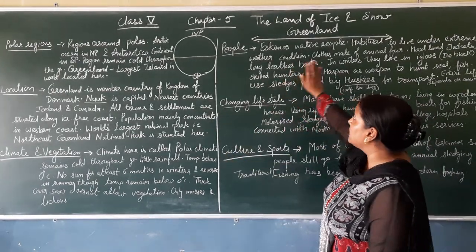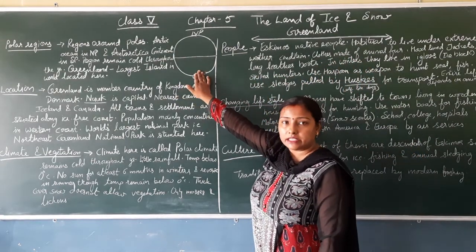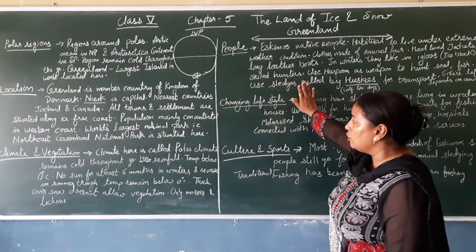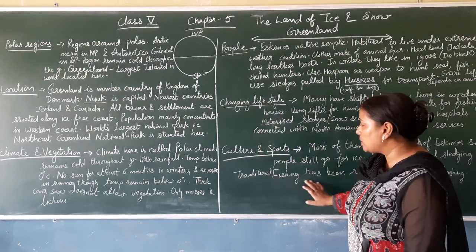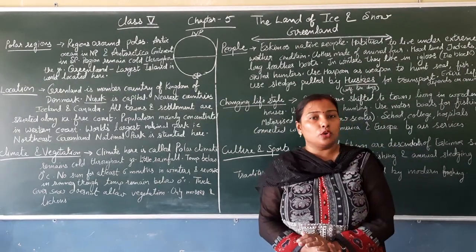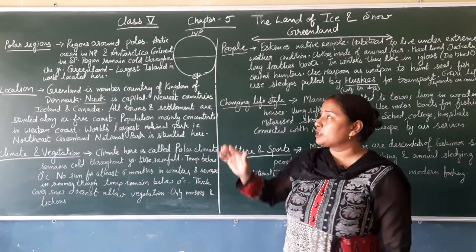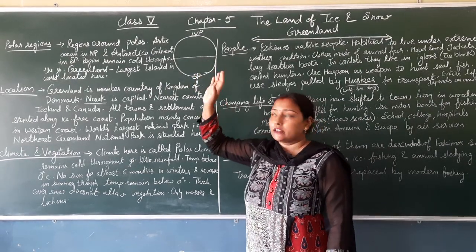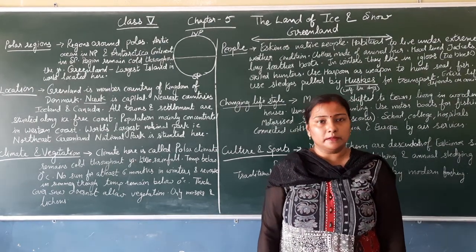So this is chapter number 5, The Land of Ice and Snow. You have now studied polar regions, the location of Greenland, its climate and vegetation, its people, how they are changing their lifestyle, and what sports and traditions they maintain. Please go through the chapter thoroughly and look at the map in your book properly so that you can locate Greenland in the diagram. We will continue with another chapter in the next class. Take care, bye-bye.